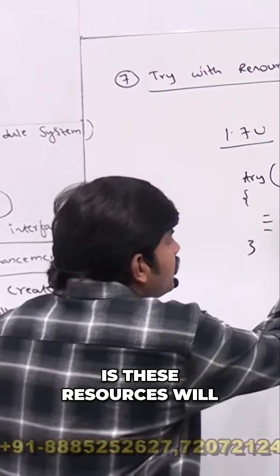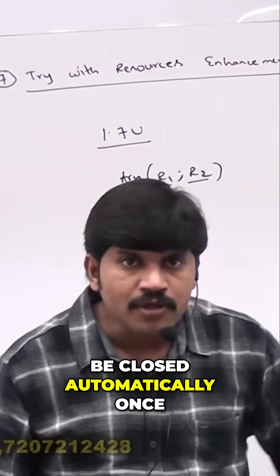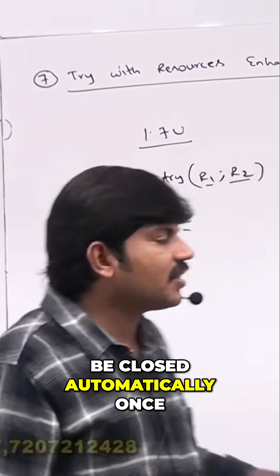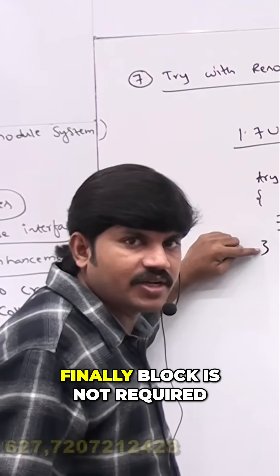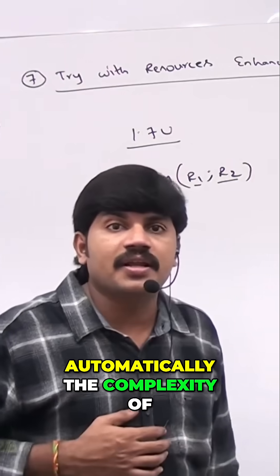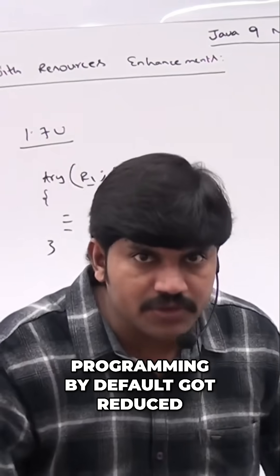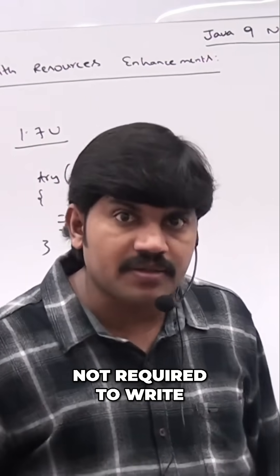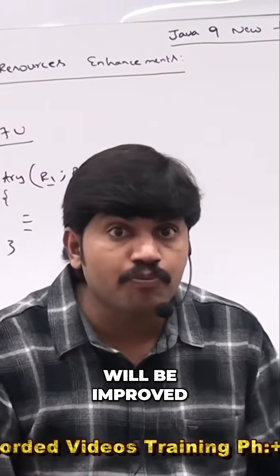The biggest advantage is that these resources will be closed automatically once the control reaches the end of the try block. The finally block is not required — we don't need to close explicitly. This reduces complex programming by default, and readability is also improved by default.